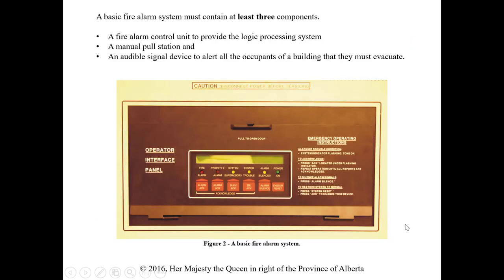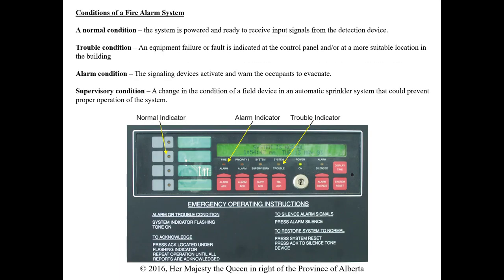In a basic fire alarm system we need at least three components. First, the fire alarm control unit provides logic for the processing system — it makes decisions when it sees a change in state from a field device. Second, a manual pull station gives us at least one way to manually initiate an alarm. Third, an audible signal device alerts all occupants that they must evacuate, whether triggered by a pull station or another field device.